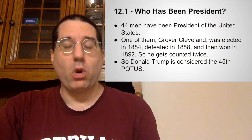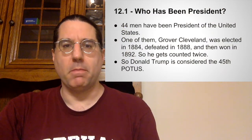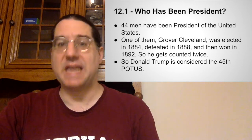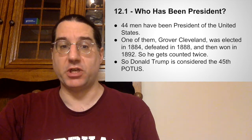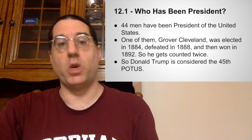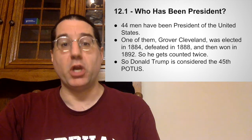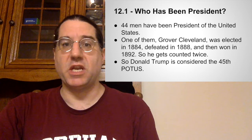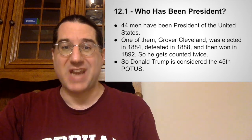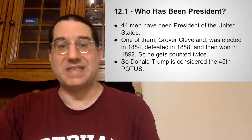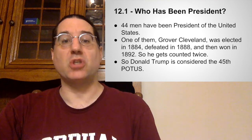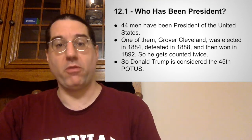We're going to start off with a little numerical quirk. There are 44 men who have been president of the United States, but one of them, Grover Cleveland, was first elected in 1884 as the 22nd president and then lost his bid for re-election in 1888 to Benjamin Harrison, who became the 23rd president. But then Cleveland came back in 1892 and defeated Harrison in a rematch. He's the only president to serve non-consecutive terms, and so this second term was considered the 24th presidency, and Cleveland is also credited as the 24th president.